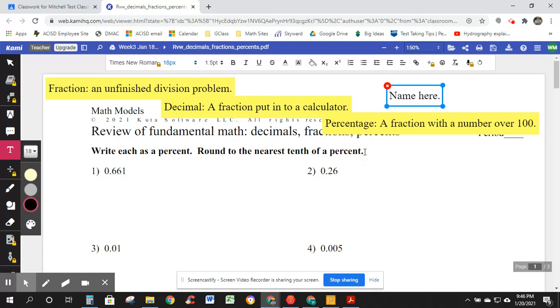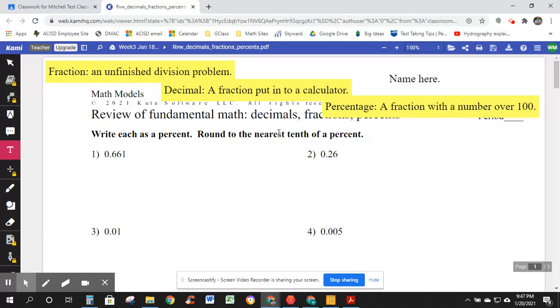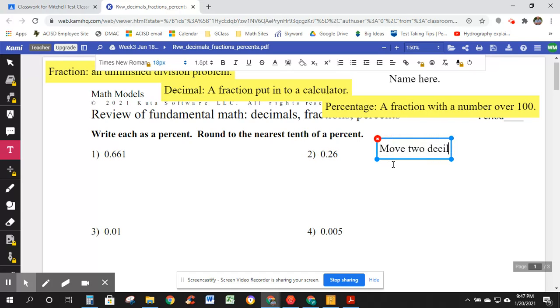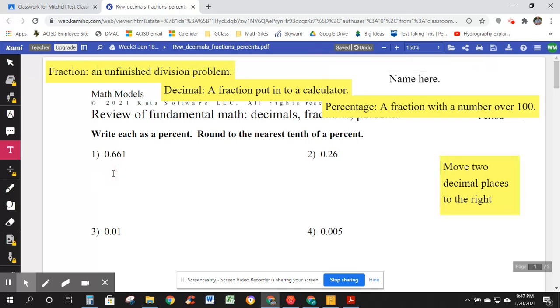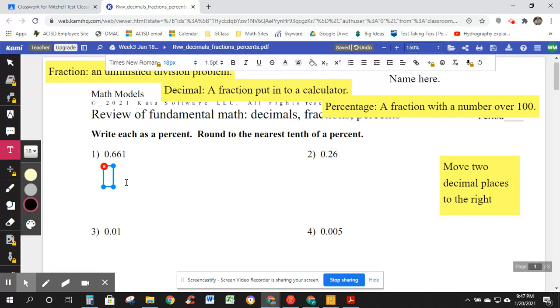So here we go. Write each as a percent round to the nearest tenth of a percent. So I've got different things I can do in Kami here. I can add more comments. Let me give it a little comment over here. So write each as a percent. Here's what I want to do for this. I want to move two decimal places to the right. And I can kind of squash this up here and drag it over, and we'll make that a color too. There. Move two decimal places to the right.